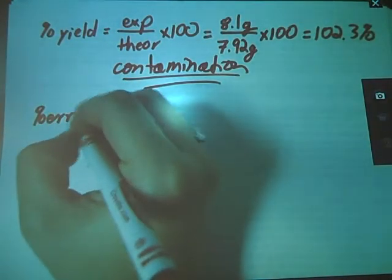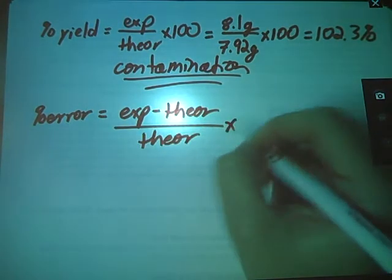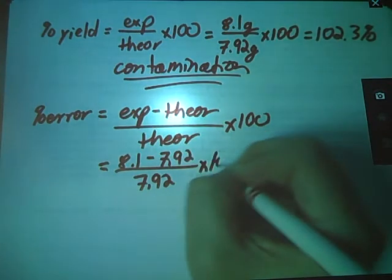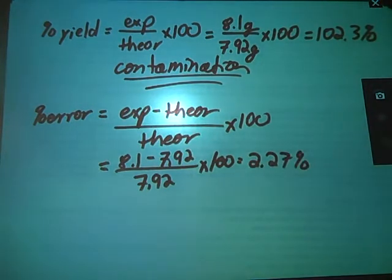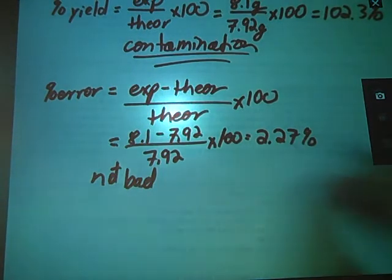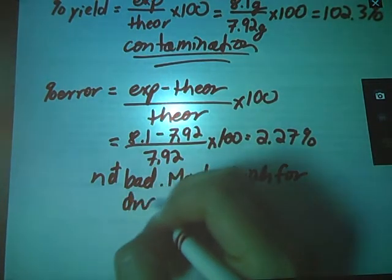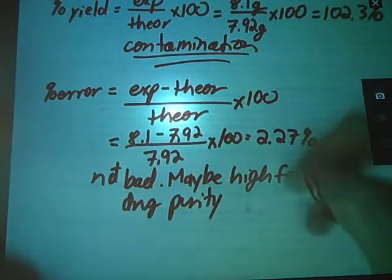Let's go ahead and do percent error. Let's see what that one tells us. That's going to be our experimental minus our theoretical that our stoic gave us, divided by our theoretical times 100. So that's 8.1 minus 7.92 divided by 7.92 times 100 equals... Ah, camera battery, please don't die yet. Let me get through this problem. So we only have a 2.27% error. That's pretty good. That's not bad. Not bad at all. However, though, again, when you're doing something for a drug, that still might be a little bit high.